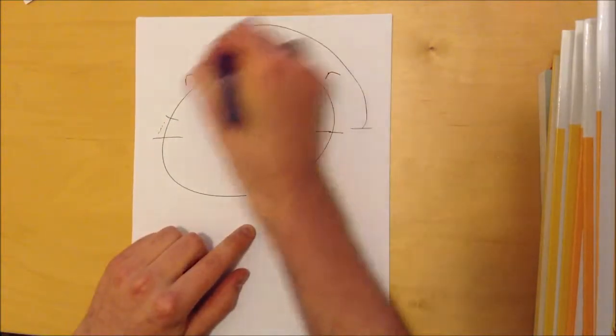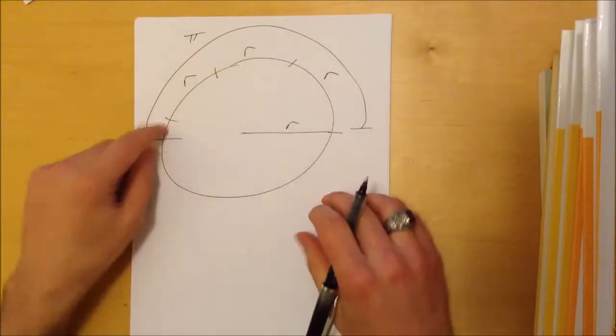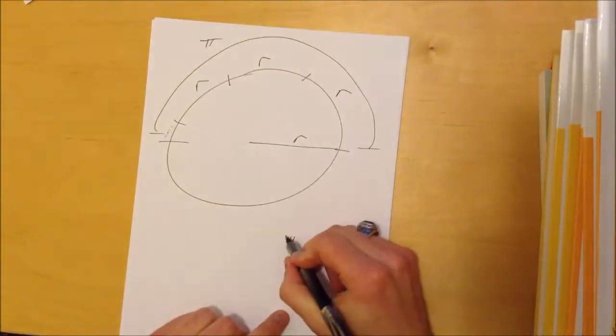Well, I'm going to call that pi. That is the definition of pi. Pi is the amount of R's needed to get half the circle. So I have pi R.